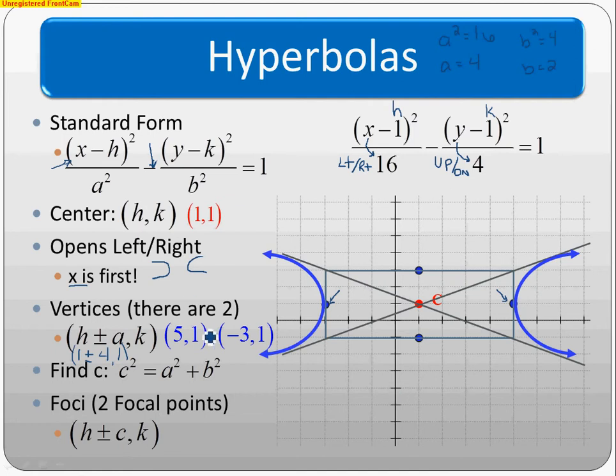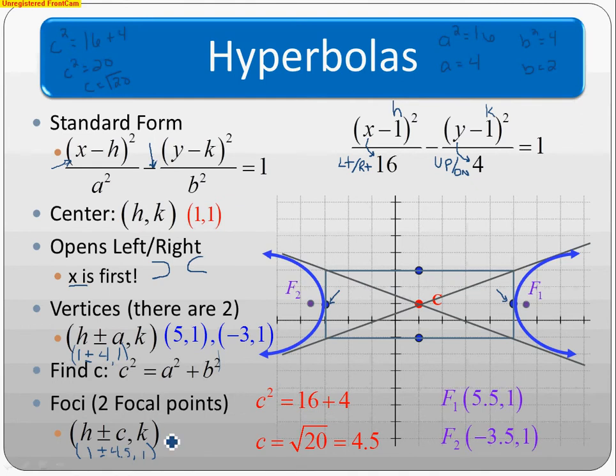Similar to ellipses, we find our C value for focal points. Here we add them - with ellipses we subtracted. C²=A²+B²=16+4=20, so C=√20≈4.5 on your calculator.